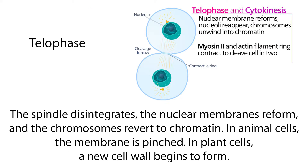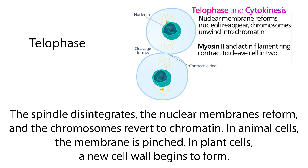Then there's telophase. The spindle disintegrates, the nuclear membranes reform, and the chromosomes revert to chromatin. In animal cells, the membrane is pinched. In plant cells, a new cell wall begins to form.